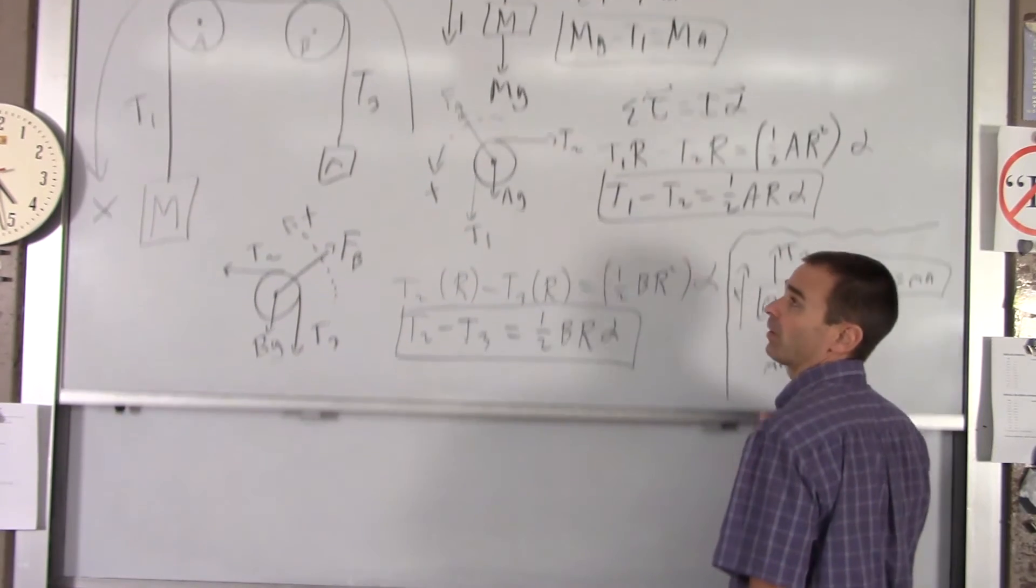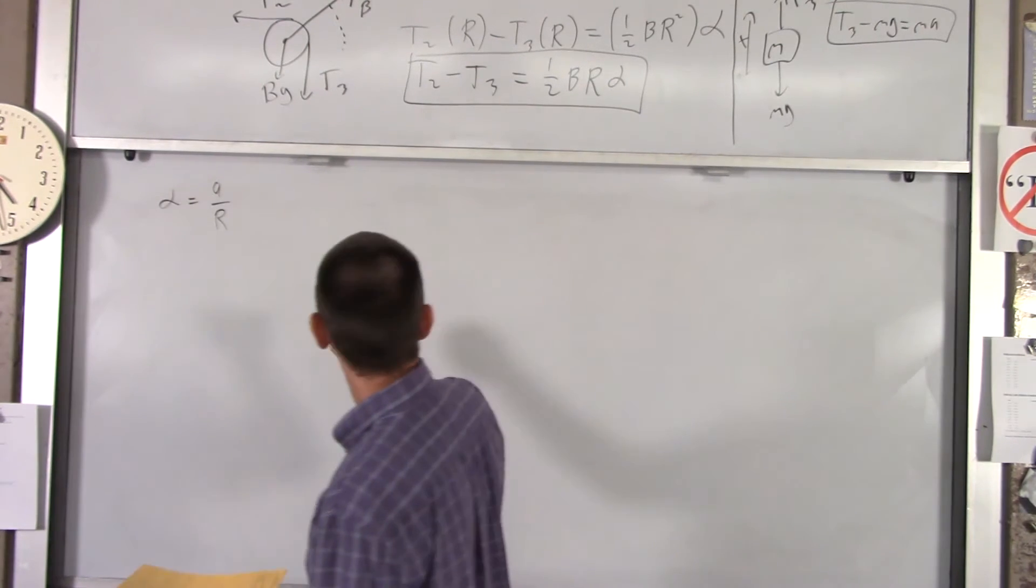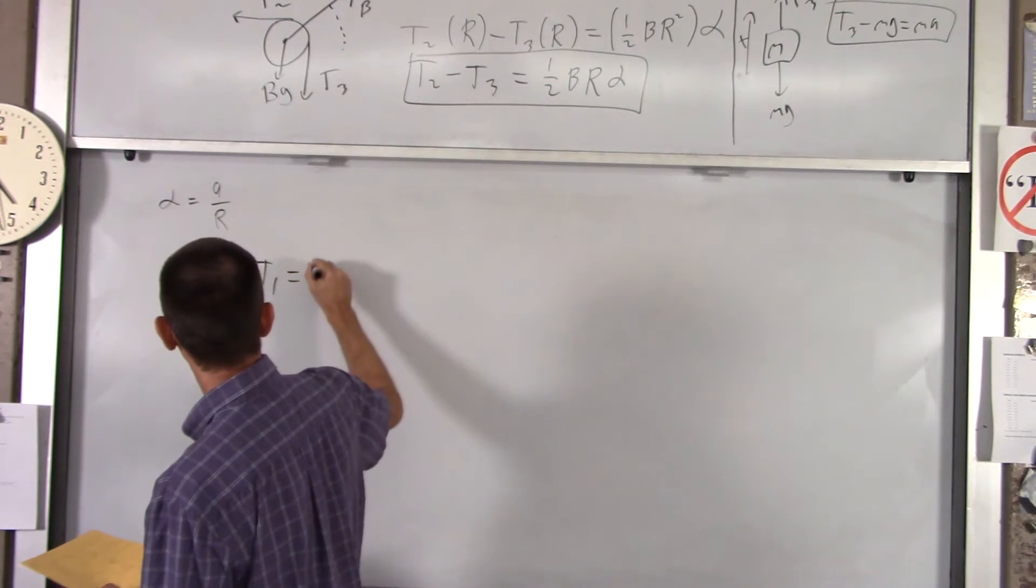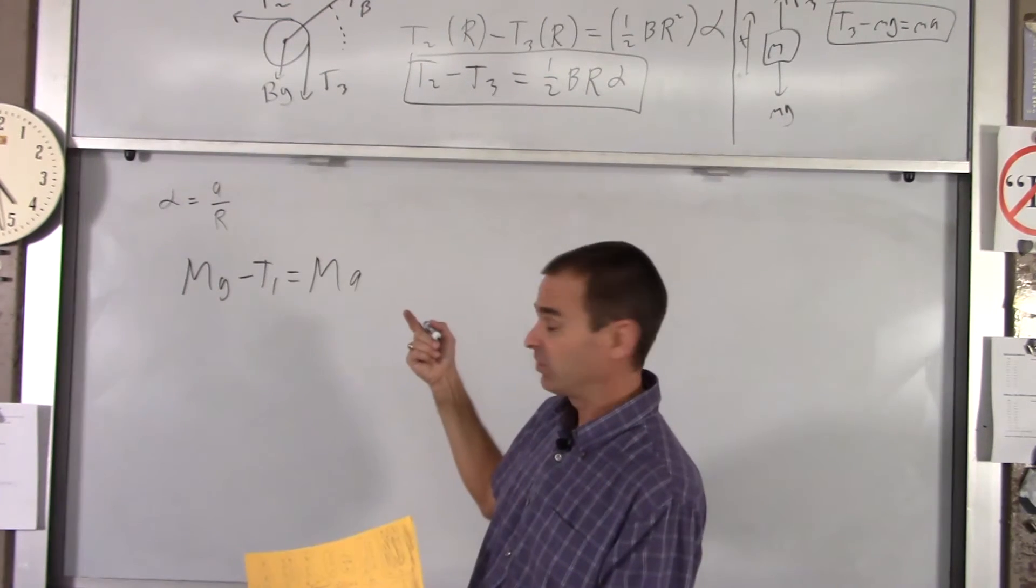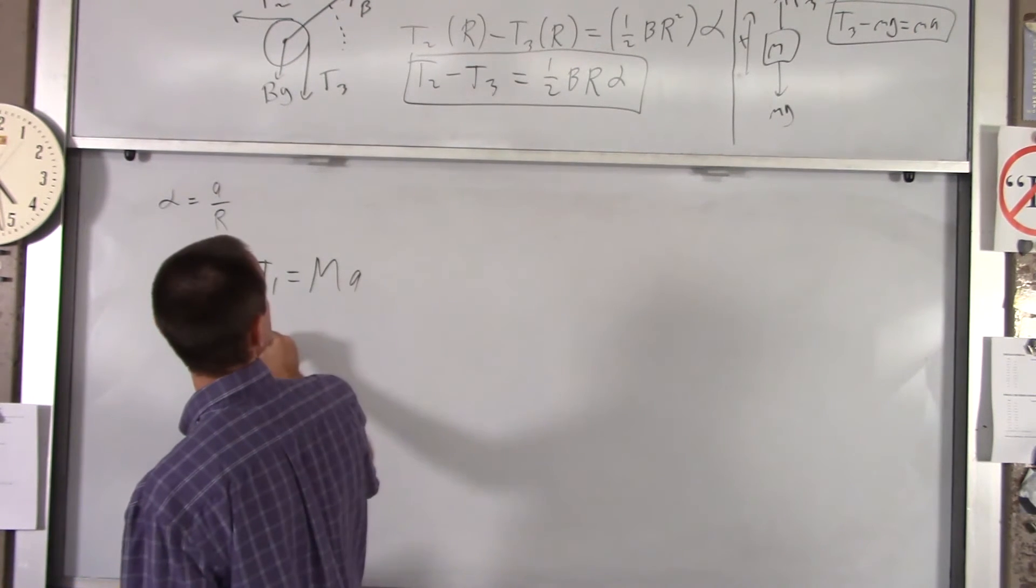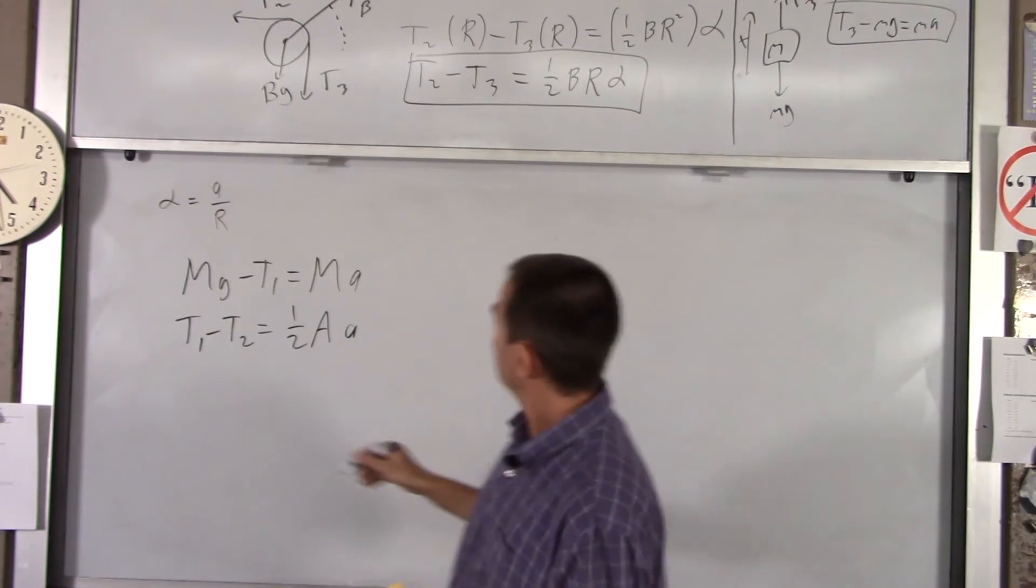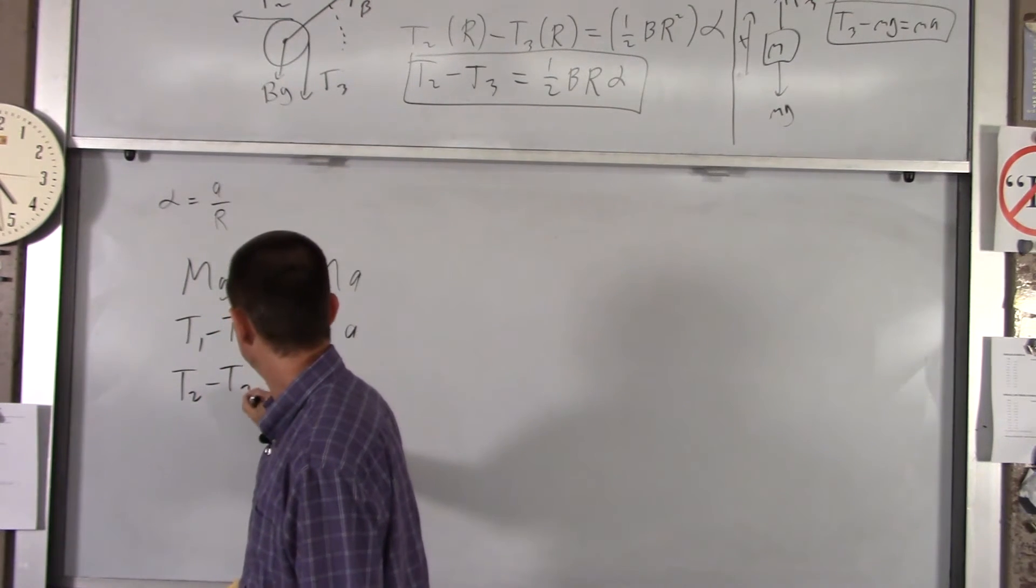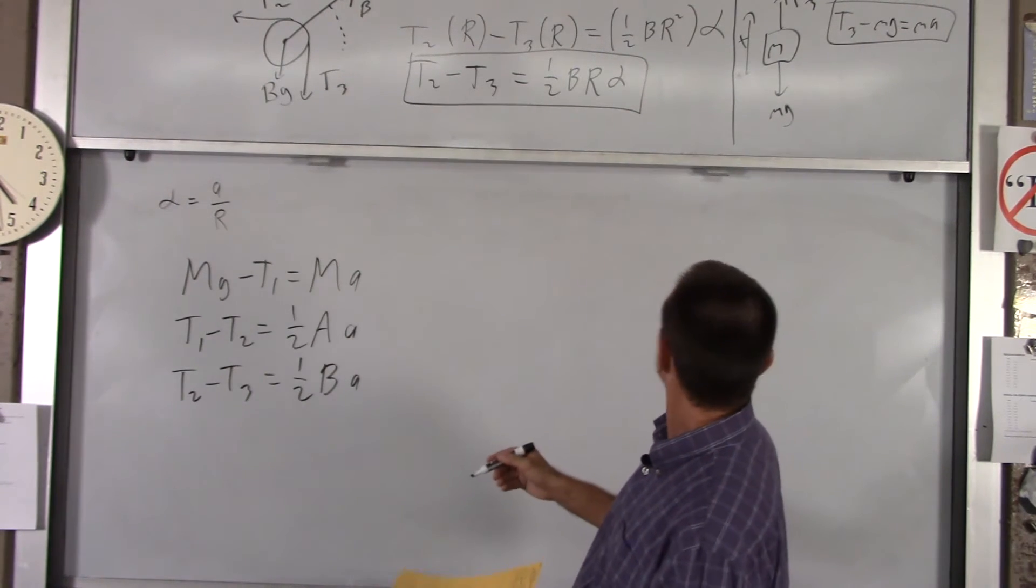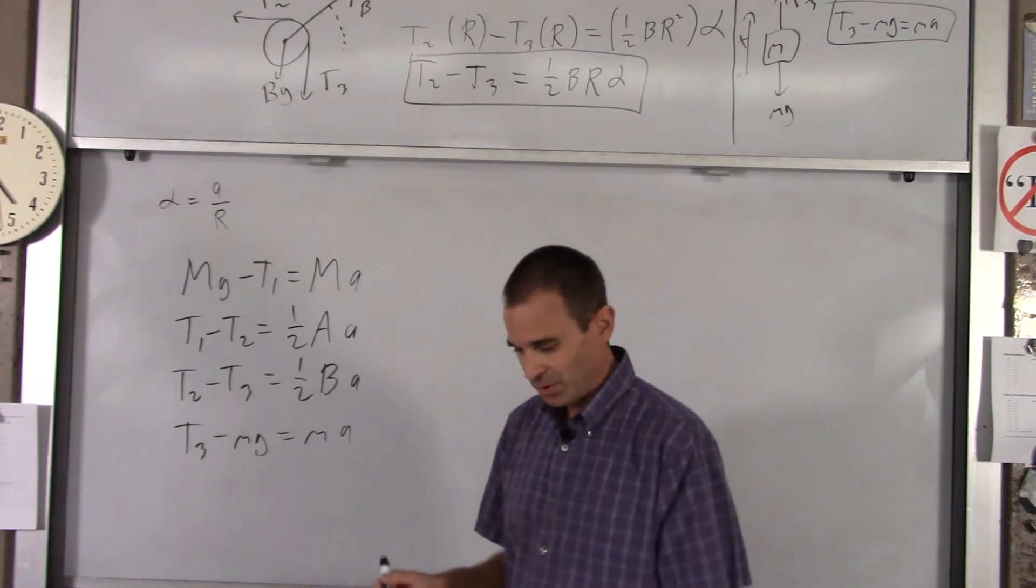Now, the cool part about solving an equation system like that, if you just write them down, one over the other, you get the following. We got big Mg minus T1 equals big MA. The second equation, once you make that substitution, you get T1 minus T2 equals 1 half the mass of pulley A times the acceleration. The third equation becomes T2 minus T3 equals 1 half B times acceleration. And finally, the last equation you have is T3 minus little mg equals little MA.